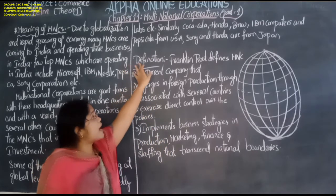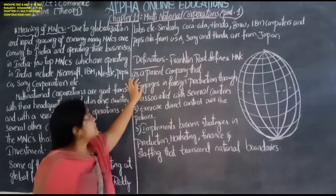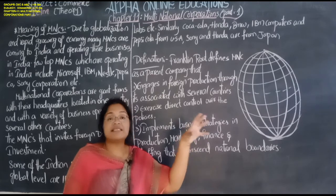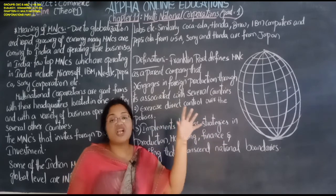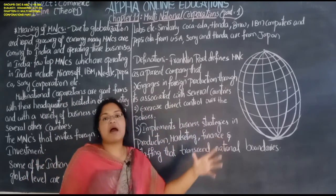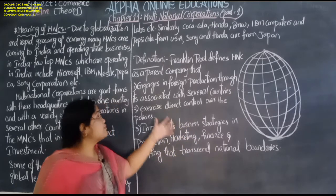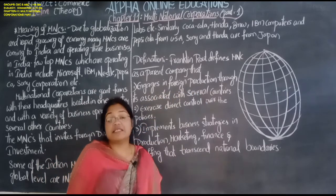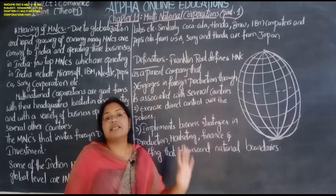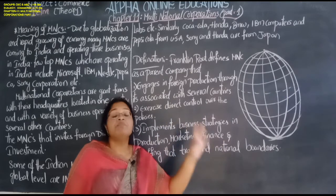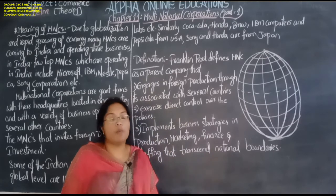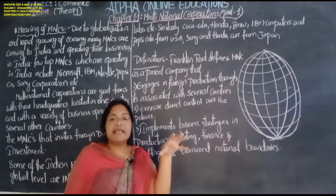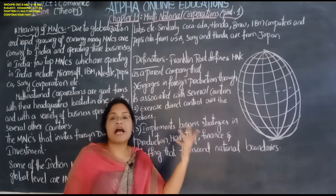Let us see the definition given by Franklin Root. According to Franklin Root, MNCs are parent companies. He calls them parent companies because MNCs are not small companies — they have huge capital, huge numbers of employees, and a huge amount of turnover. They are engaged in foreign production through association with several countries, with the head office located in one country but activities carried on all over the globe. They also exercise direct control over the policies of those countries where they operate, following local policies to continue their business operations.